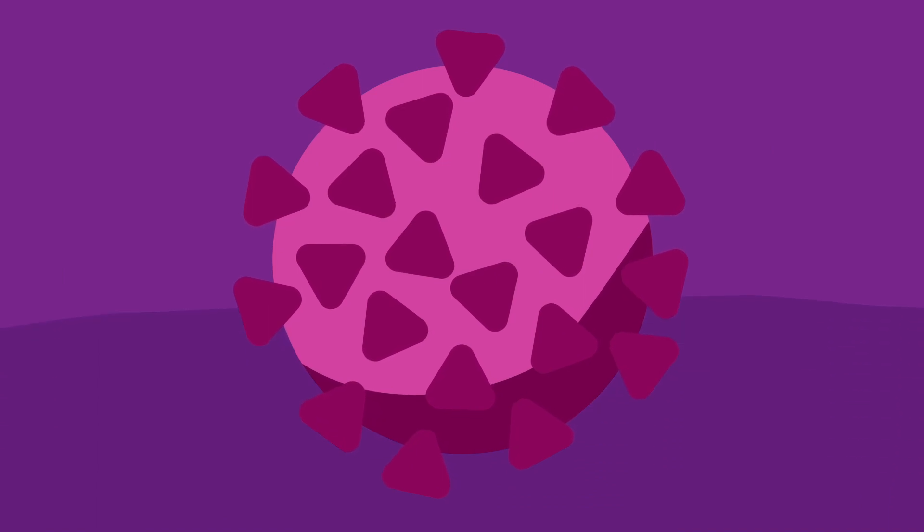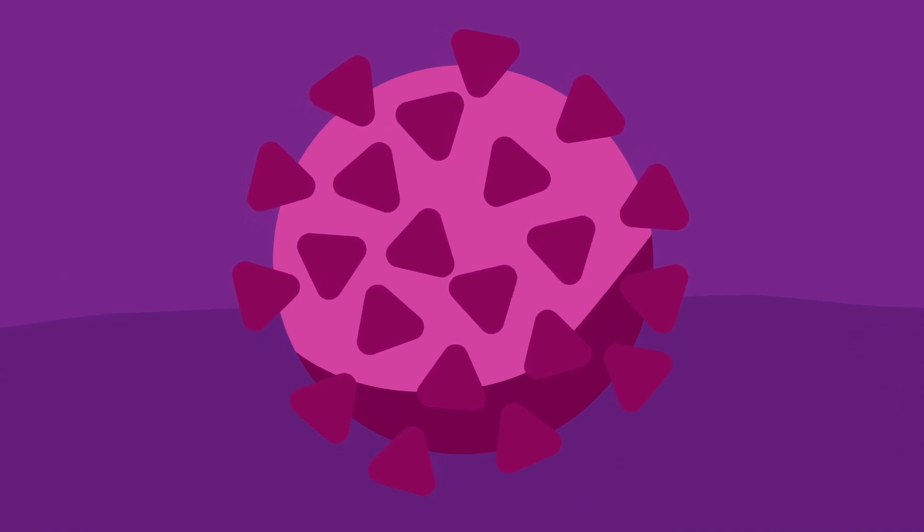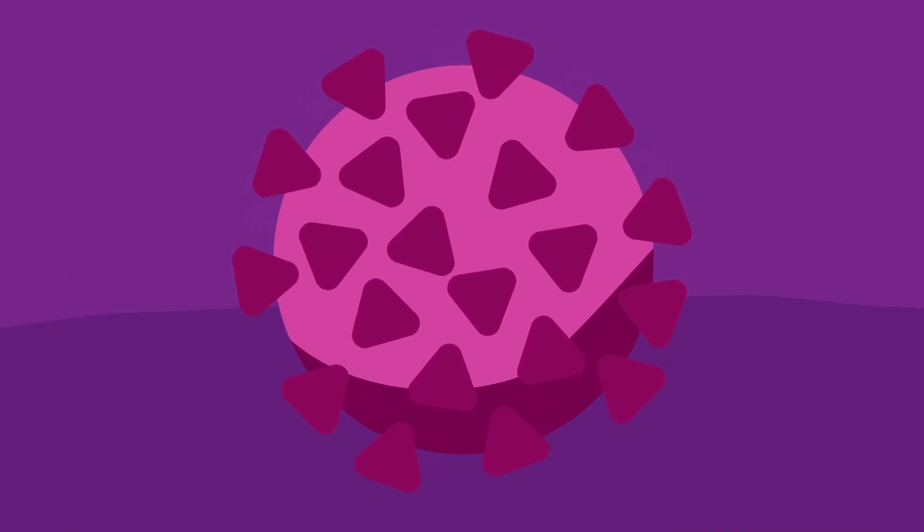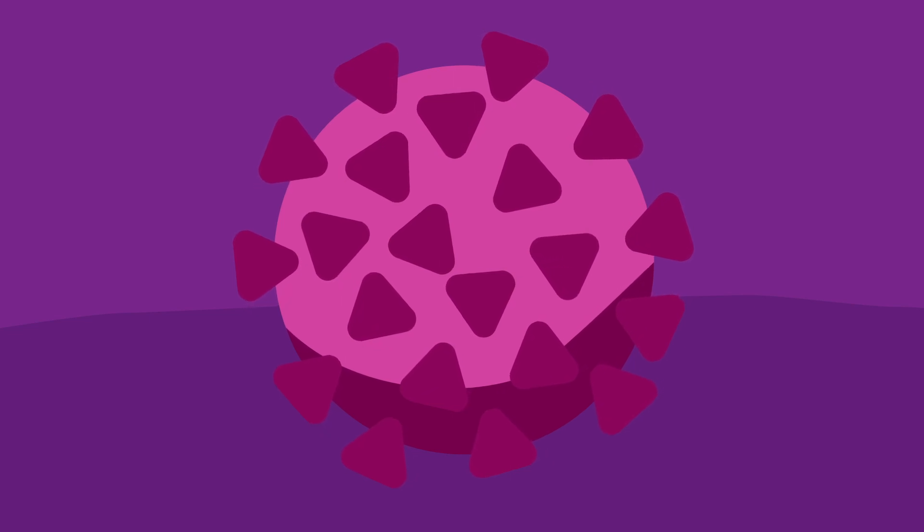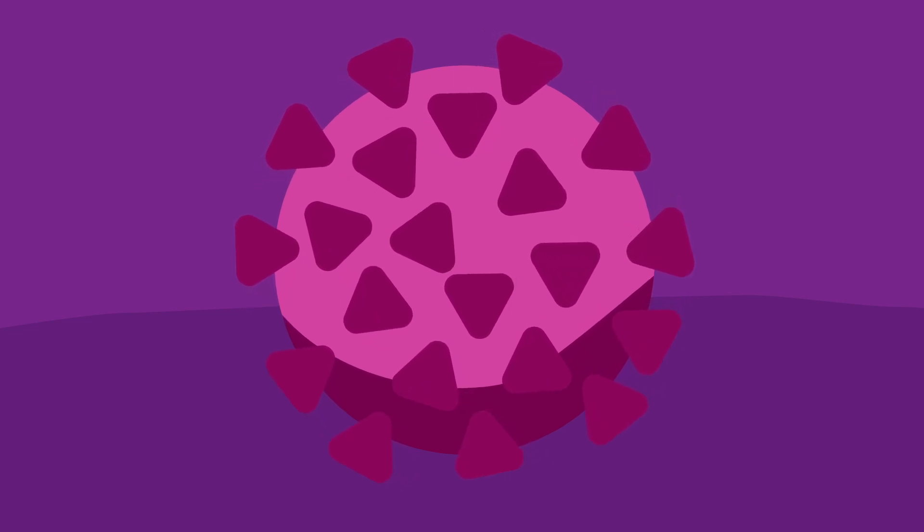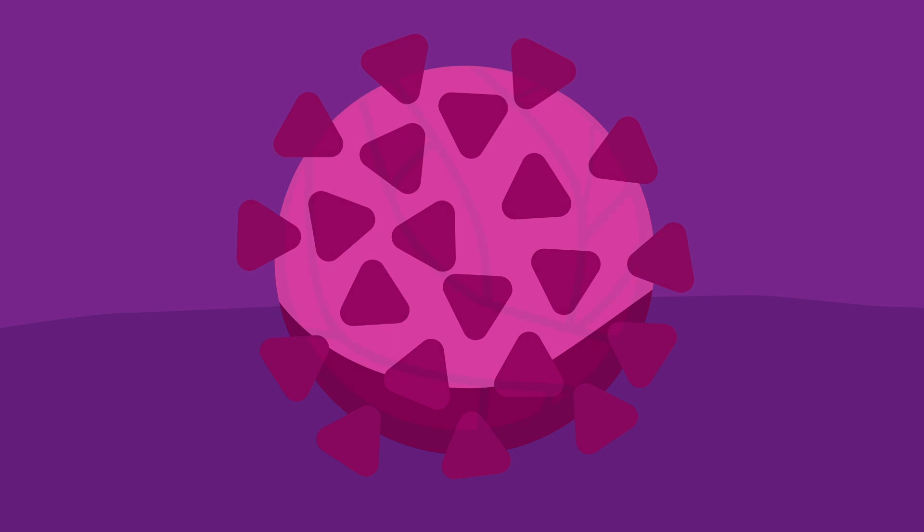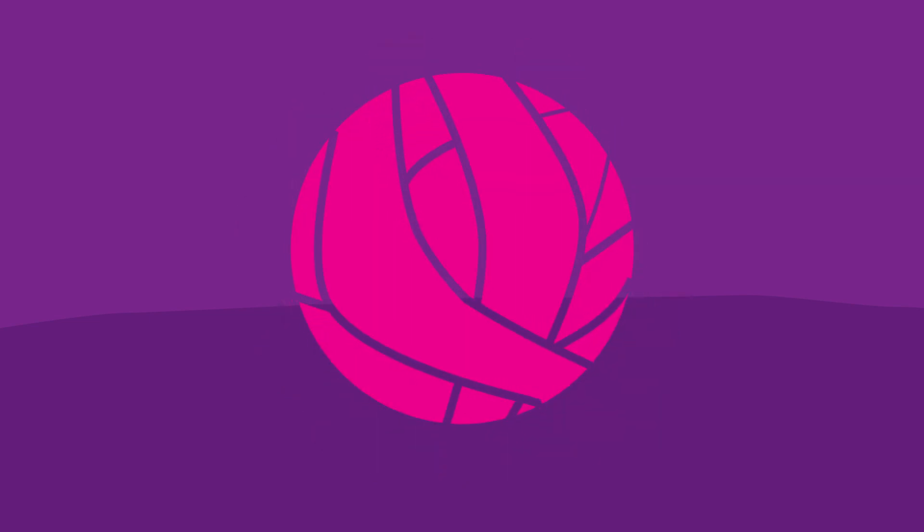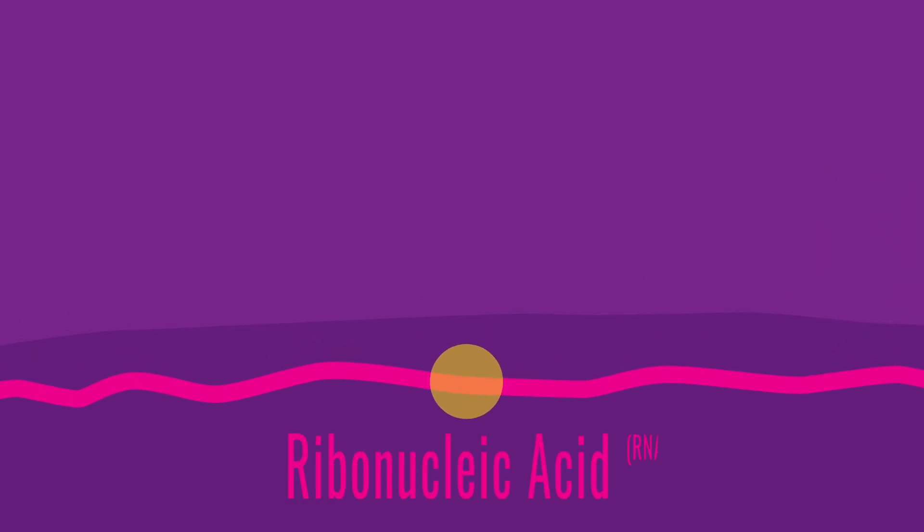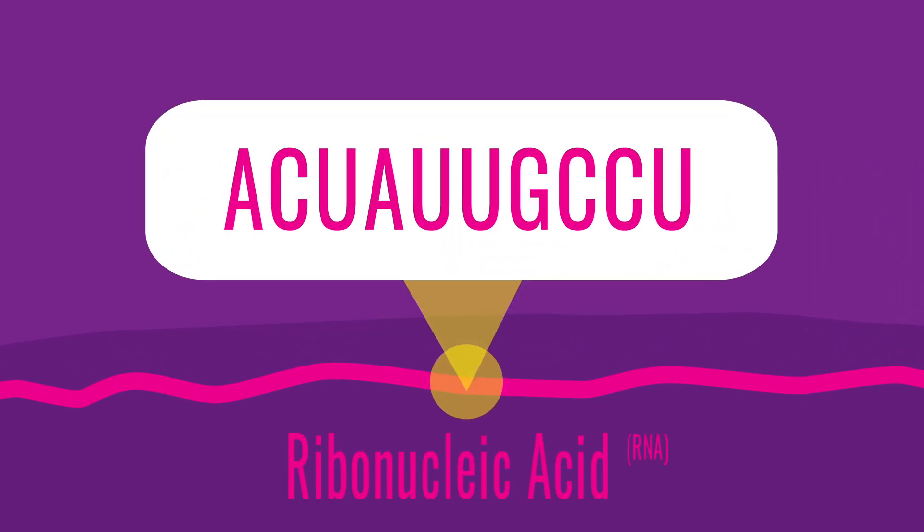The SARS-CoV-2 virus is a tiny sphere with spikes on it, which you've seen many depictions of in the news. But at a fundamental level, what you see in those pictures is not really the virus. The true virus is inside that packaging material. Inside is a molecular thread of ribonucleic acid, also known as RNA. This is the virus's genome.